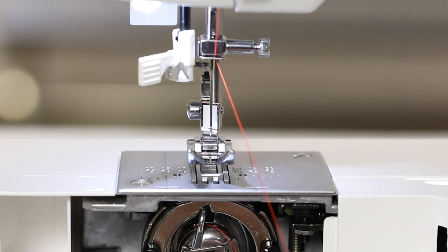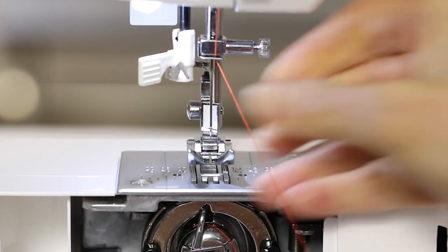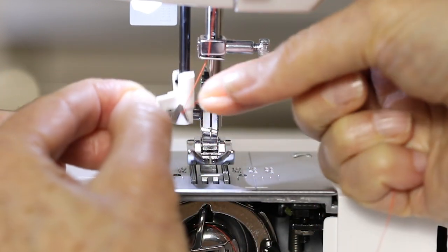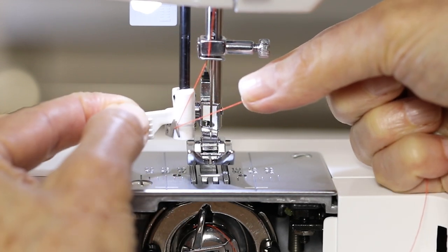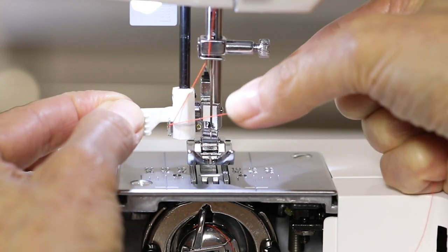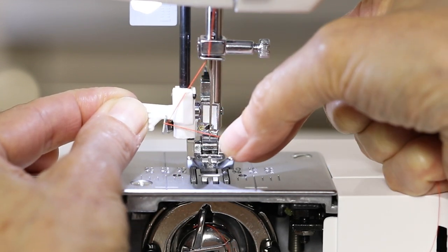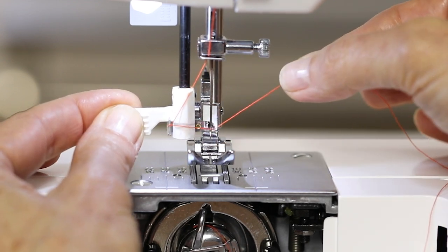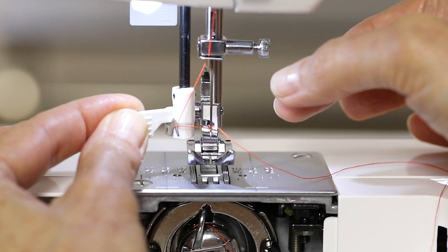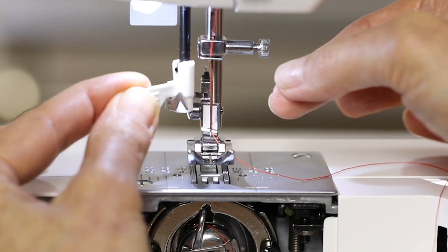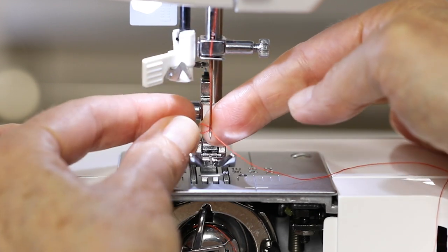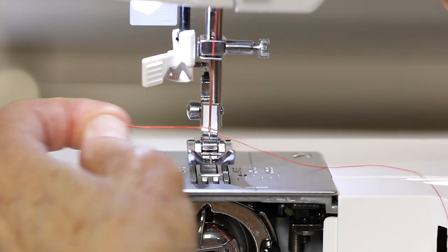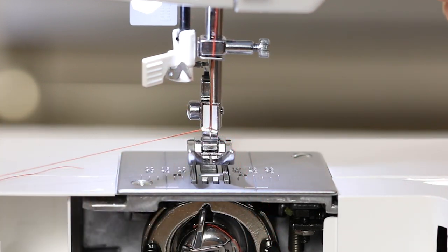Make sure your needle is in its highest position and we're going to use the built-in needle threader to thread the needle. Bring the thread around this thread guide on the left and then swing it around until the prongs encompass the needle. Lightly hold the thread as you let the threader swing back until it forms a loop. Pull the loop to thread the needle.